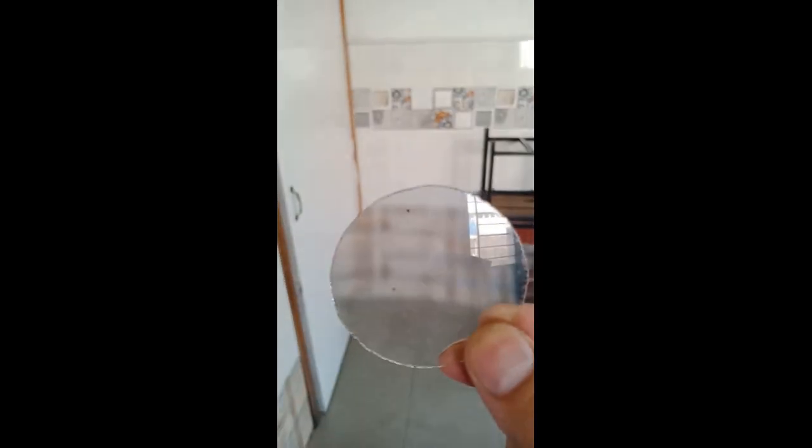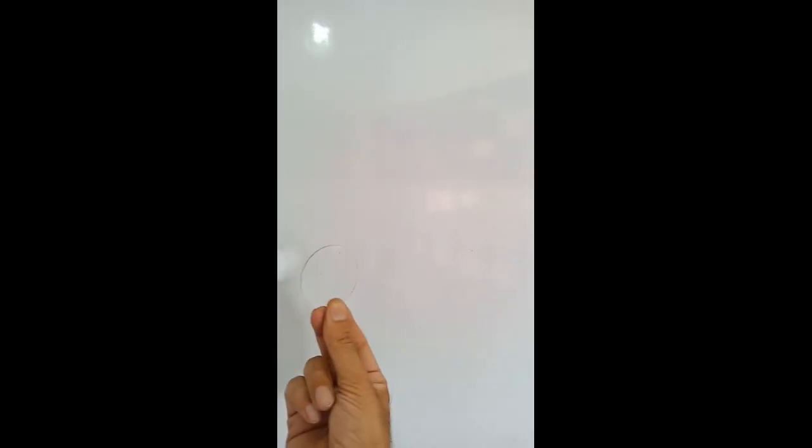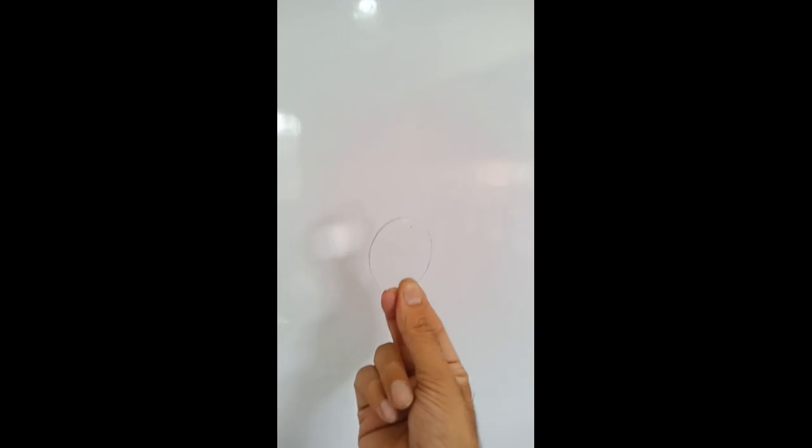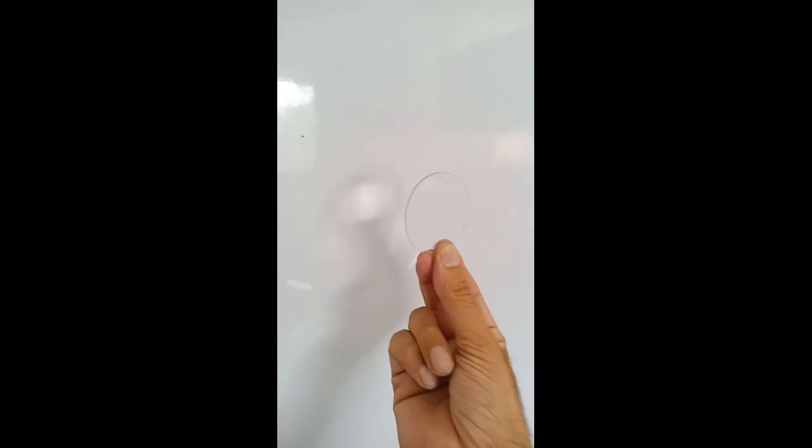First of all, we have to find the approximate focal length of a given lens. To do this, we have to get a bright image of an object like a window on the opposite wall of the room, which we call the screen. Using the lens, I am getting the image here.